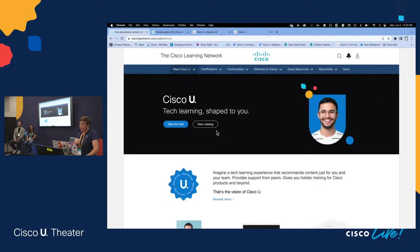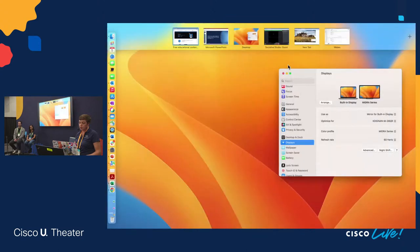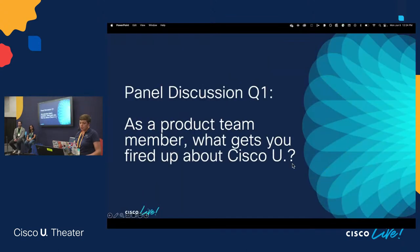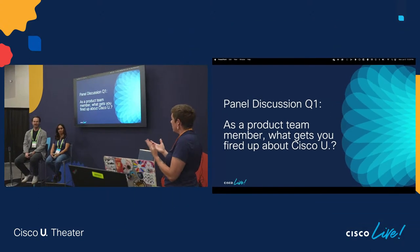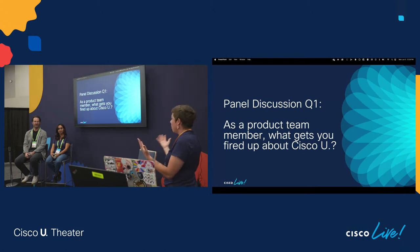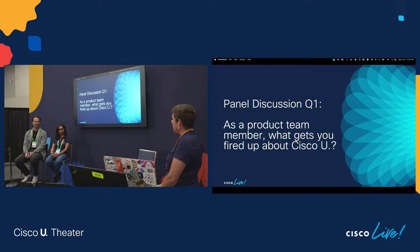Now we're going to talk a little bit about now, next, later for Cisco U as we continue to build it. And I'm going to go over to my fancy PowerPoint. Panel question one, to my coworkers — as a product team member, what gets you fired up about Cisco U? What has to this point made this a passion project? And now we get to launch it and make it real. Huma, I'm going to let you go first.